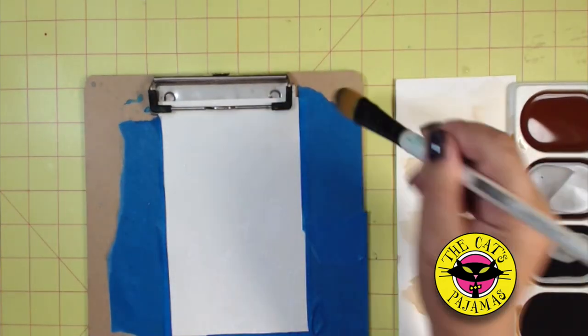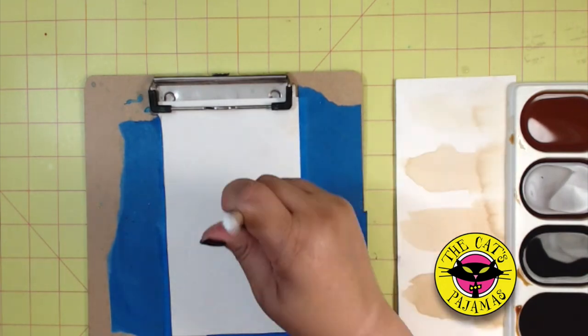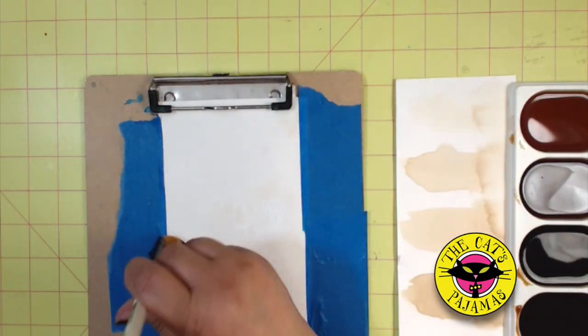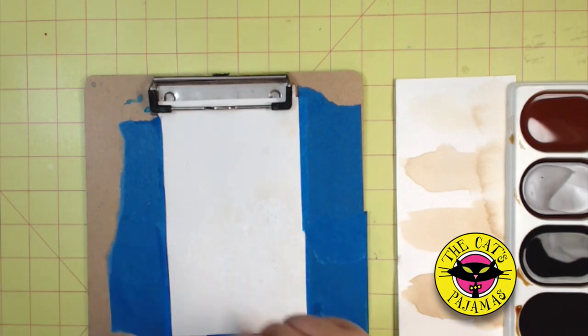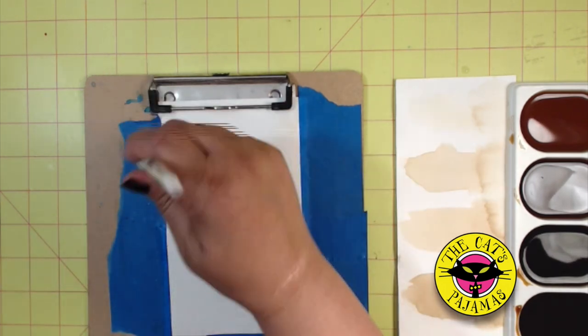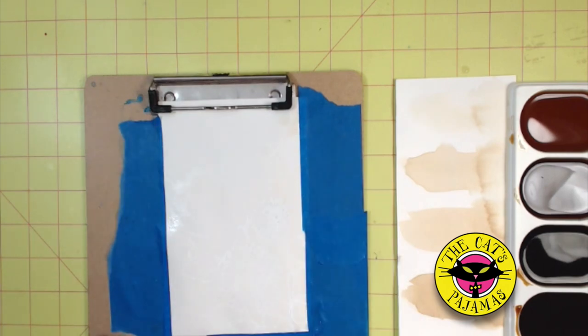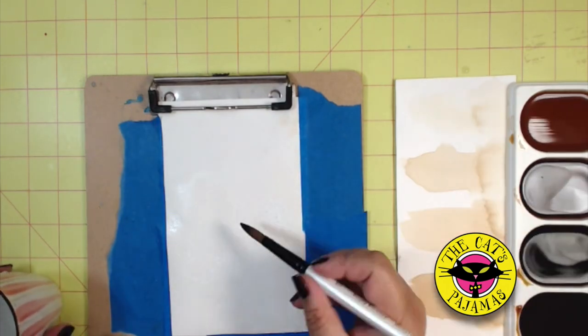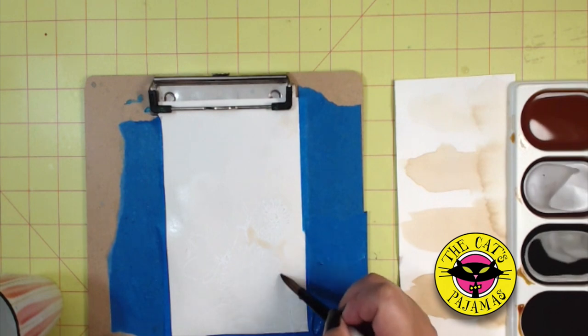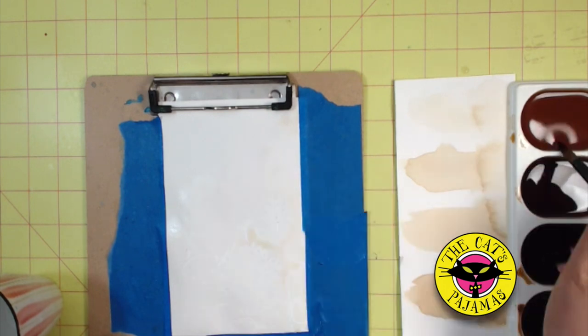Now I've taped the watercolor paper that we stamped earlier to a board in order to keep it from buckling too much when we add water to the paper. So swipe the paper with water. And just like watercolors, the coffee will spread wherever there's water.